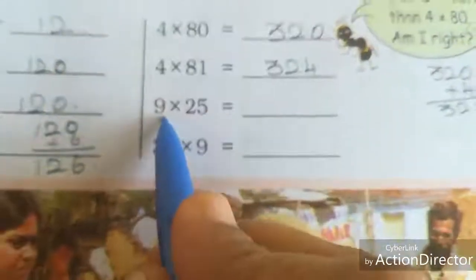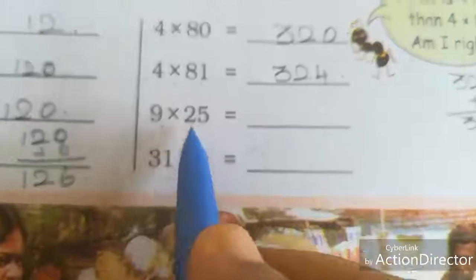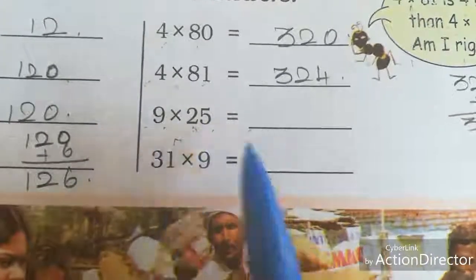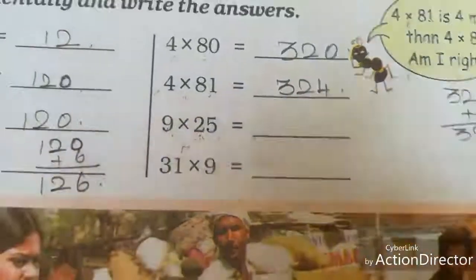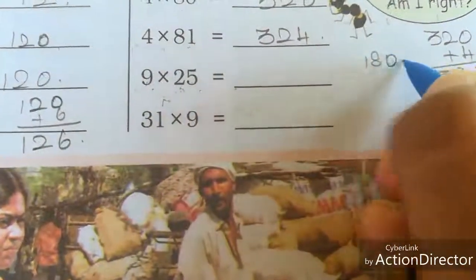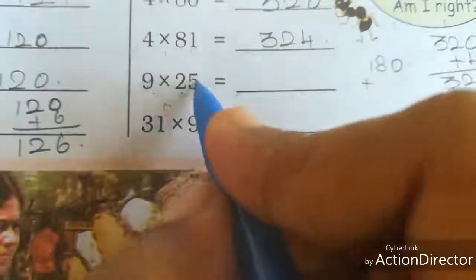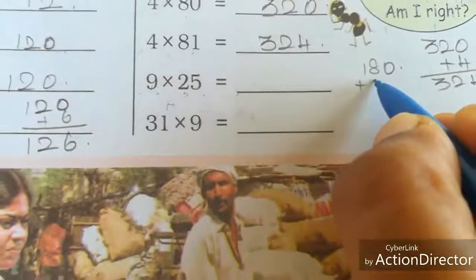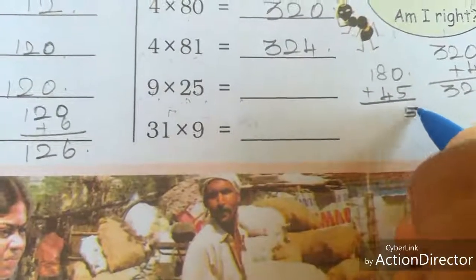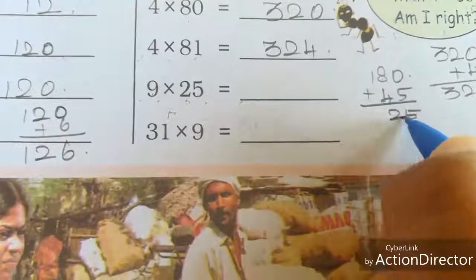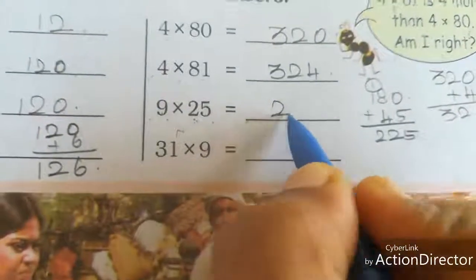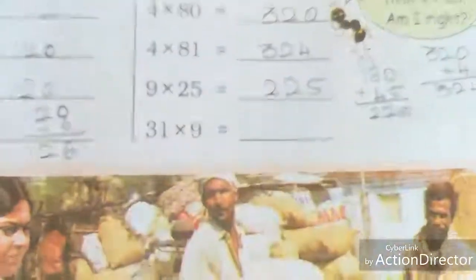Next, 9 into 25. We want to split the tens and ones: 20 plus 5. First, we want to multiply the tens. 9 twos are 18, so 180. Plus 5 nines are 45. Then you have to add: 8 plus 4 is 12, carry 1, 2. So what is the answer? 225.